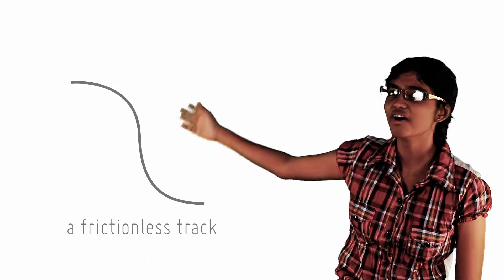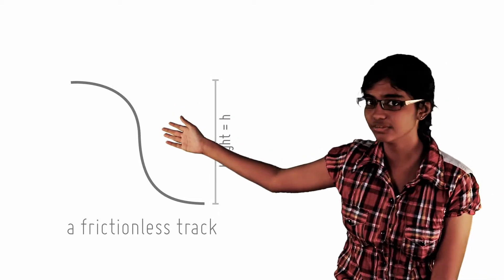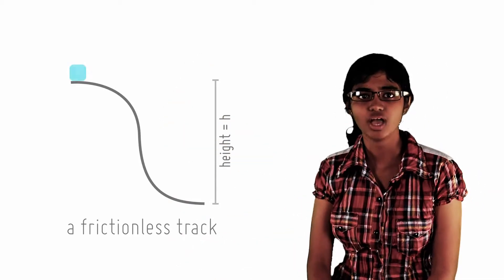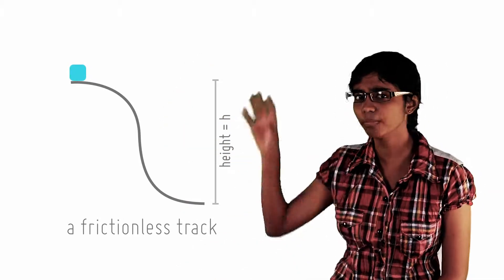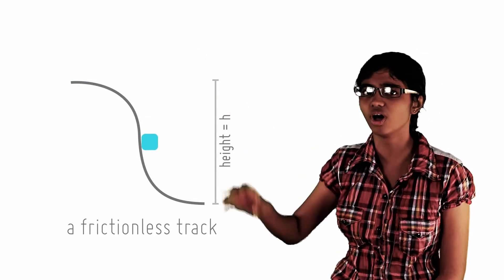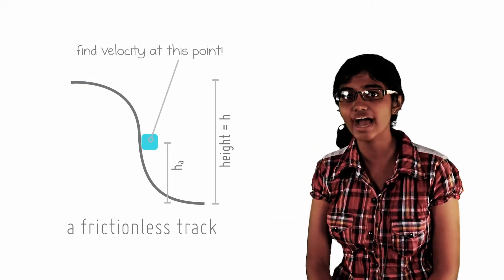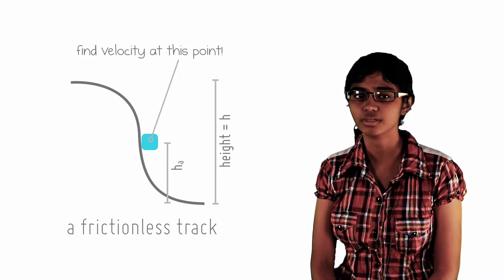Suppose I have a frictionless track shaped like this. The height of the track is h. I release a block from rest at the top of the track and wish to know its velocity at point a, a height h_a above the ground. So find it.